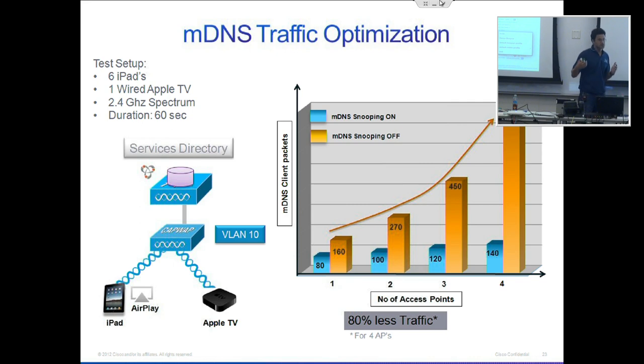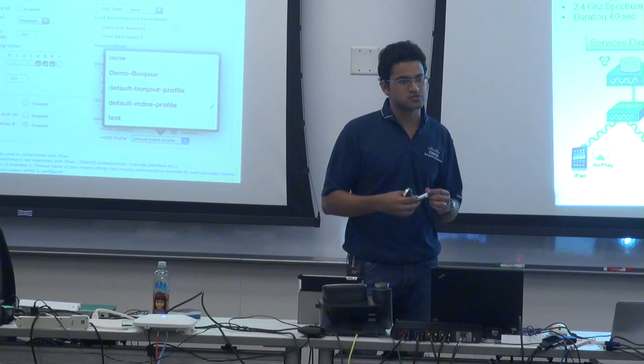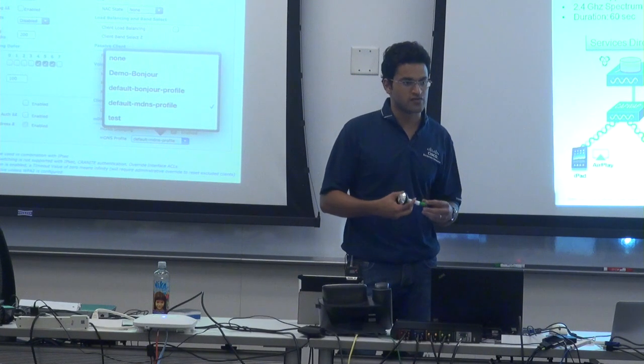As the deployment keeps increasing, we're going to see even less traffic being generated. Think about school auditoriums, stadiums, events like WWDC where everyone uses a MacBook. You're going to have so many requests over the air, and with this optimization you're not wasting any of your spectrum.